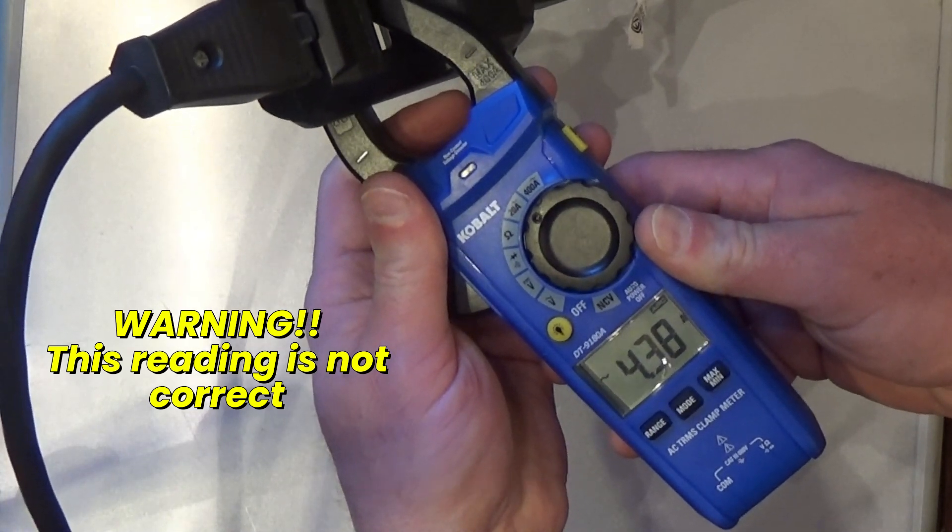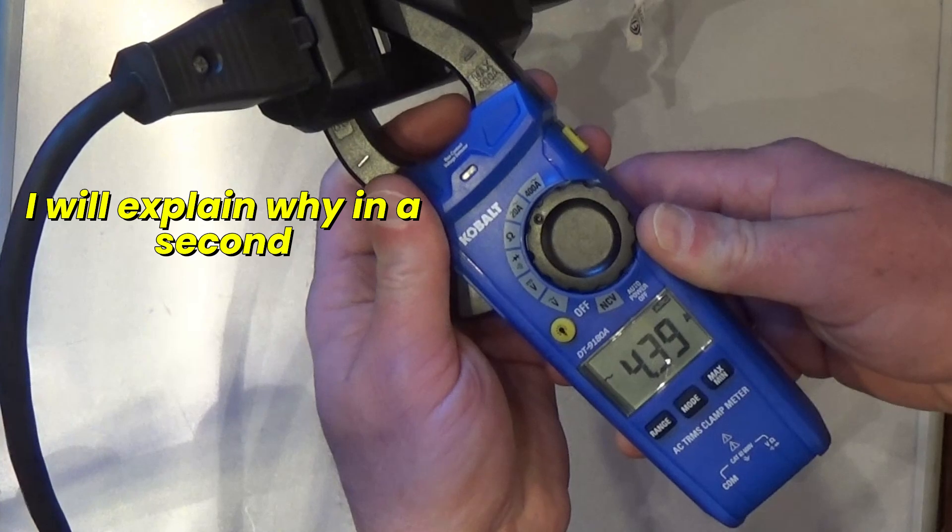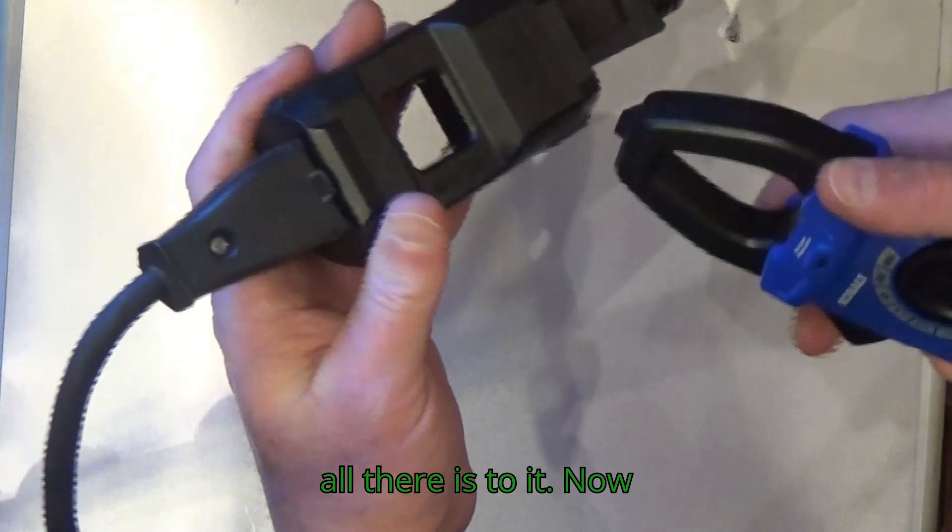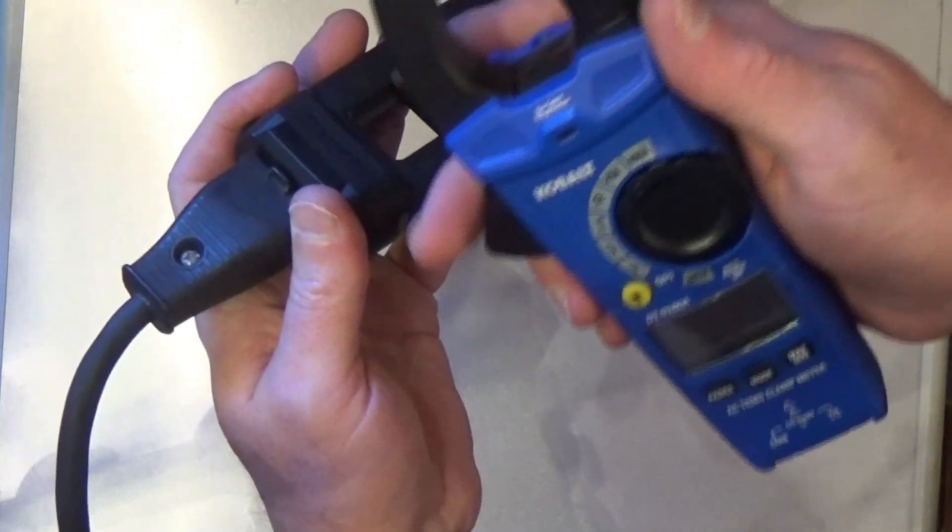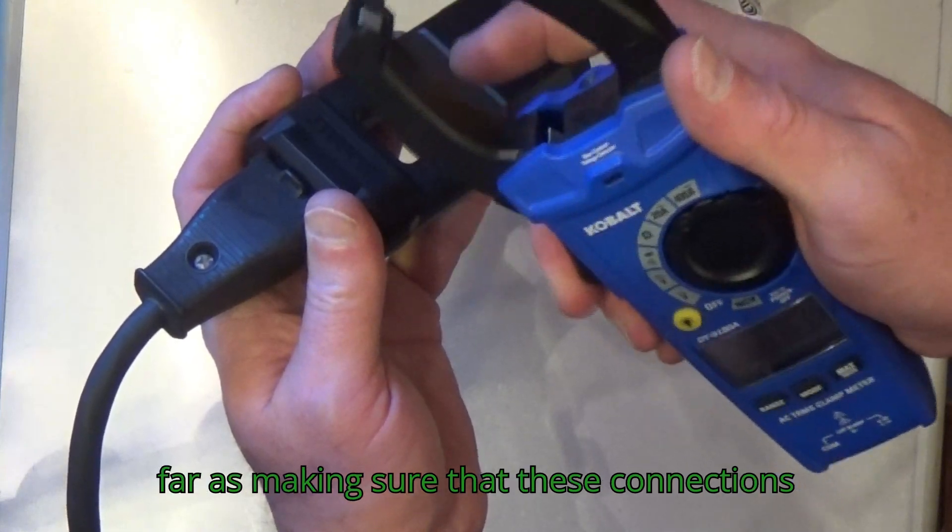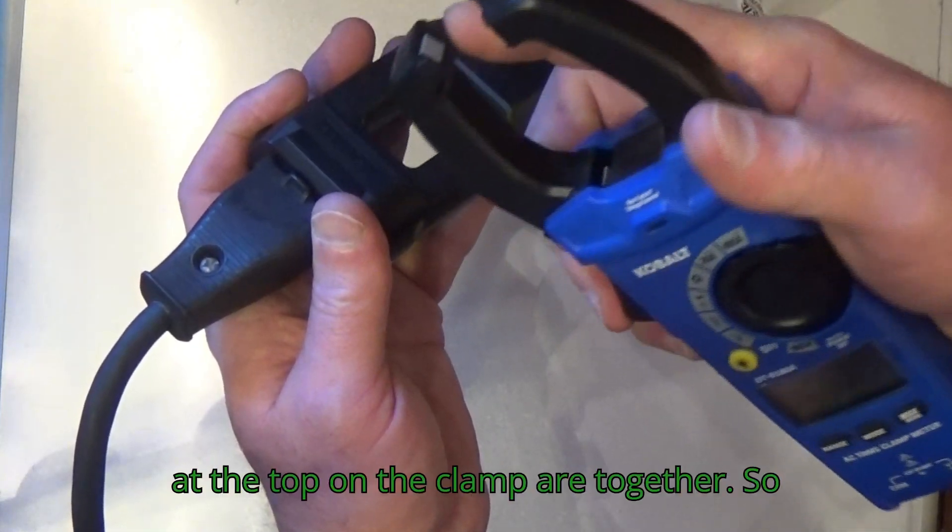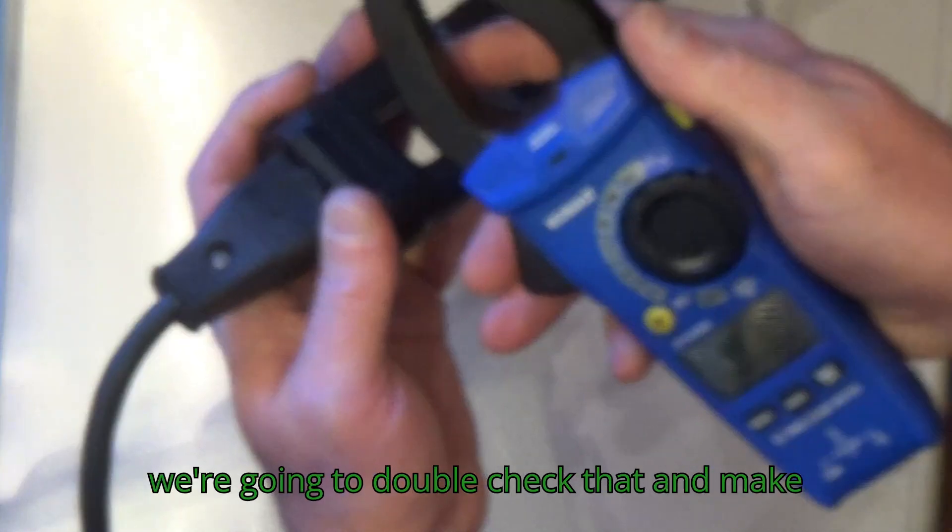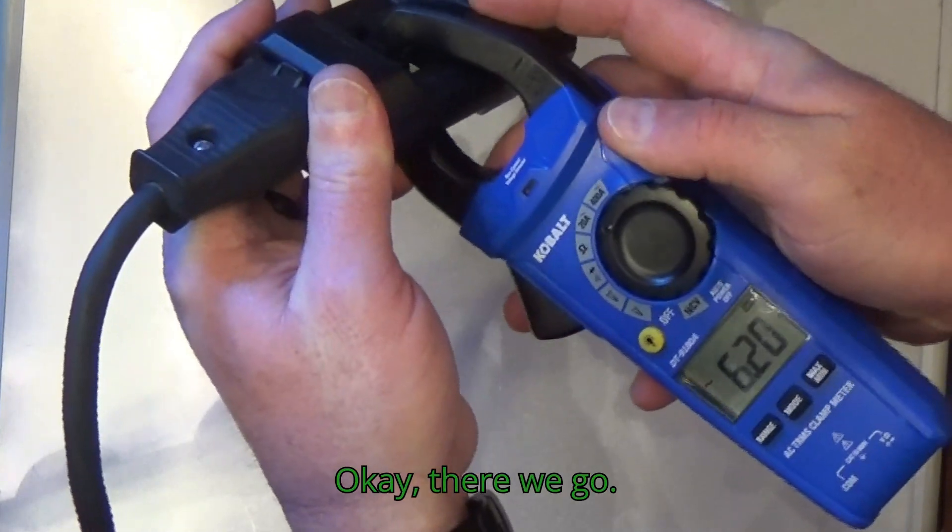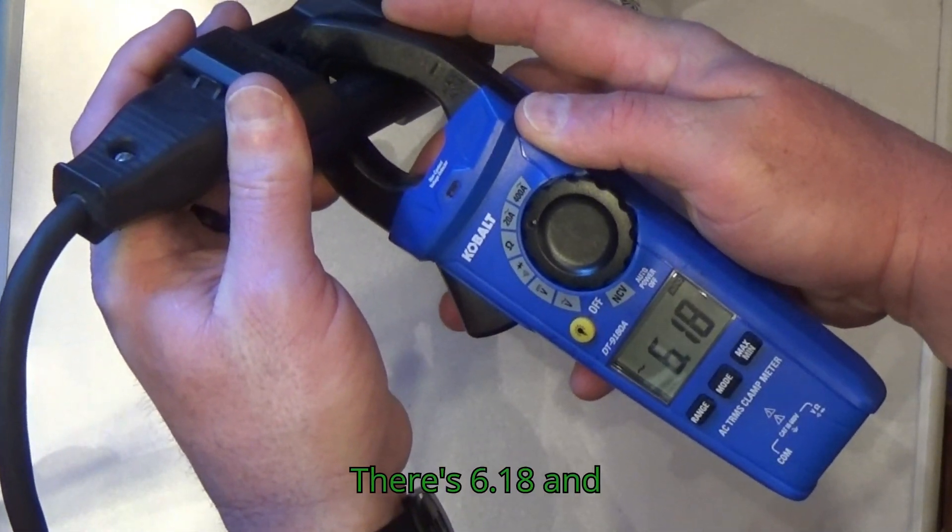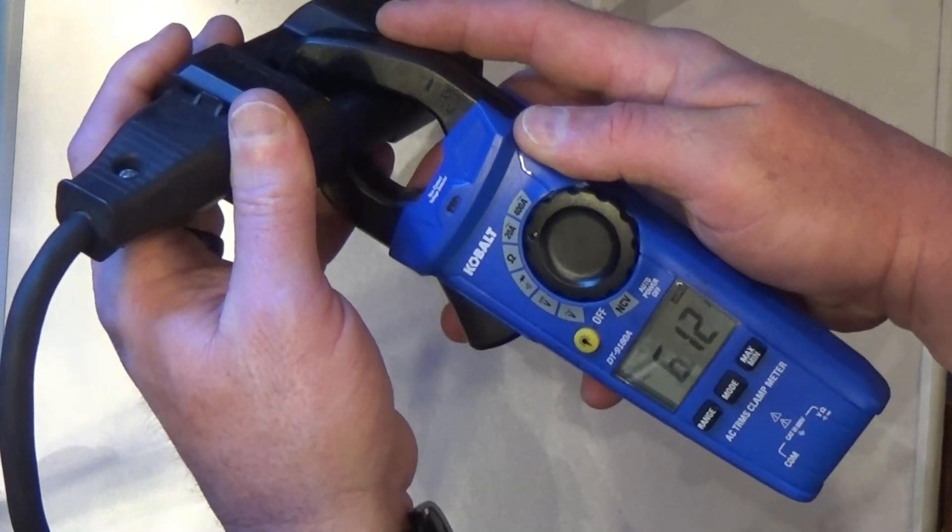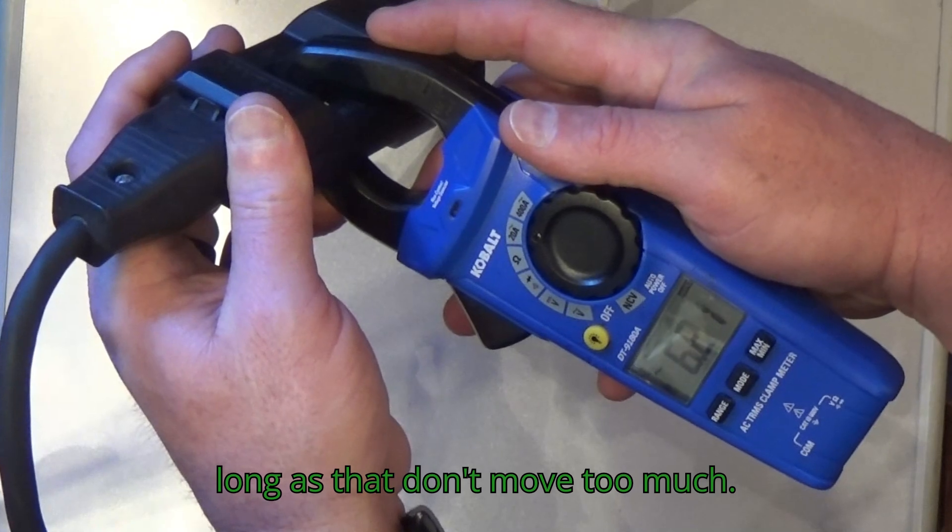About 4.38. That's really all there is to it. Now there's some tweaking you need to be concerned with, as far as making sure that these connections at the top on the clamp are together. So we're going to double check that because I think it was wrong. Okay, there we go. There's 6.18 and it's solid, as long as I don't move too much.